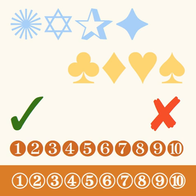Zapf Essentials is an update to the Zapf Dingbats family which consists of six symbol-encoded fonts categorized in: Arrows 1, Black Arrows, Arrows 2, White Arrows, Patterned Arrows, Communication, Pointing Fingers, Communication Devices, Markers, Squares, Triangles, Circles, Ticks, Hearts, Crosses, Checkmarks, Leaves, Office, Pen, Clock, Currency, Scissors, Hand, Ornaments, Flowers, and Stars — for a total of 372 glyphs.